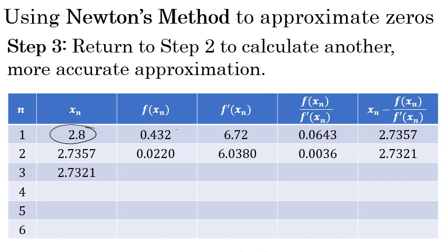The original estimate was 2.8. Whenever you evaluate 2.8 in the original function, you get 0.432 as I did in step one. And then when you evaluate 2.8 in the derivative, you'll get 6.72. And then the work that I did in step one gives a second better estimate of 2.7357.